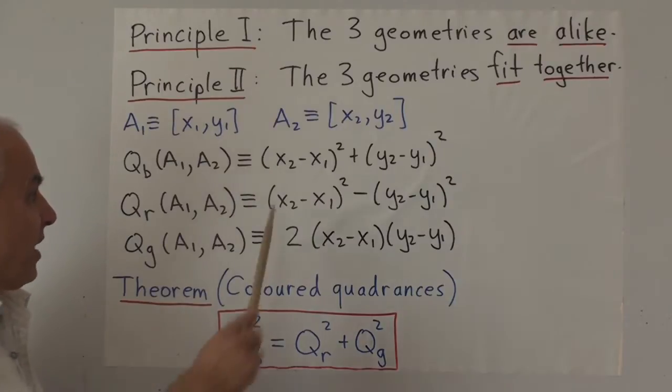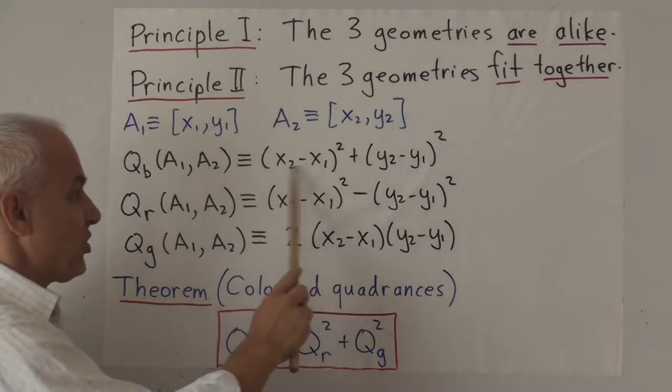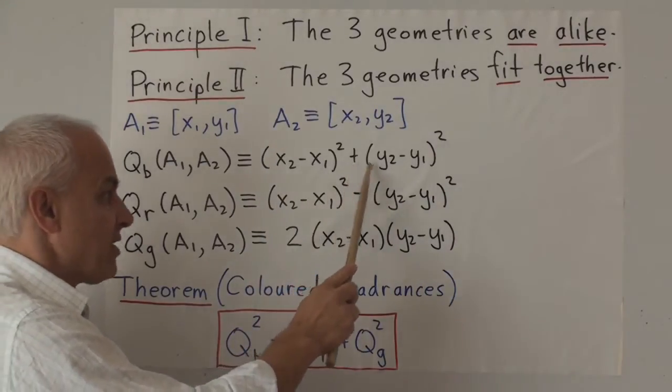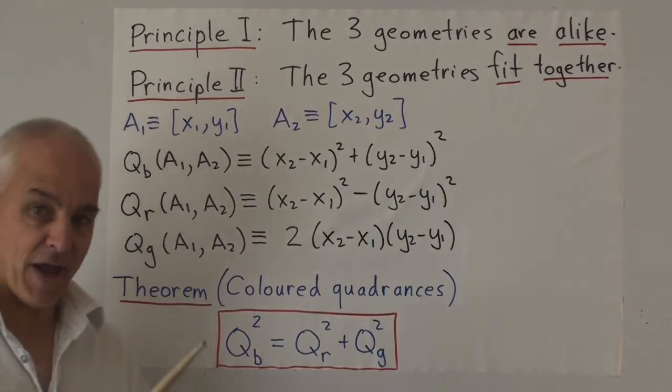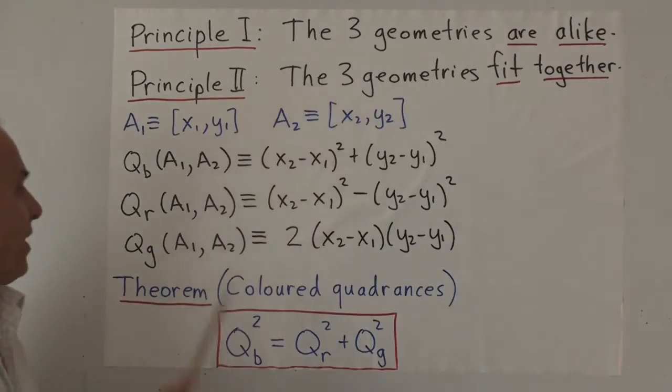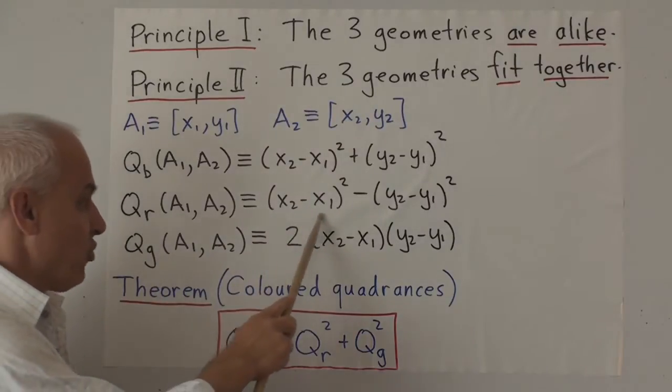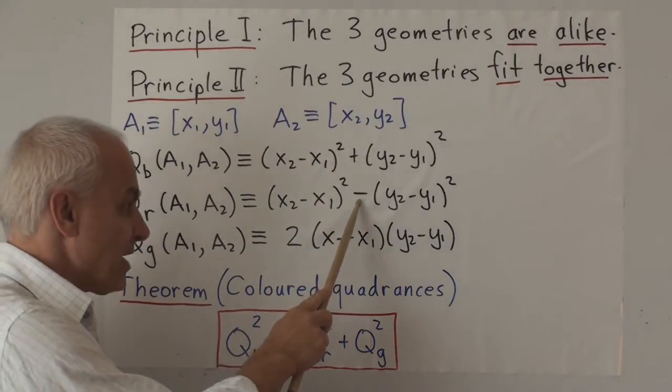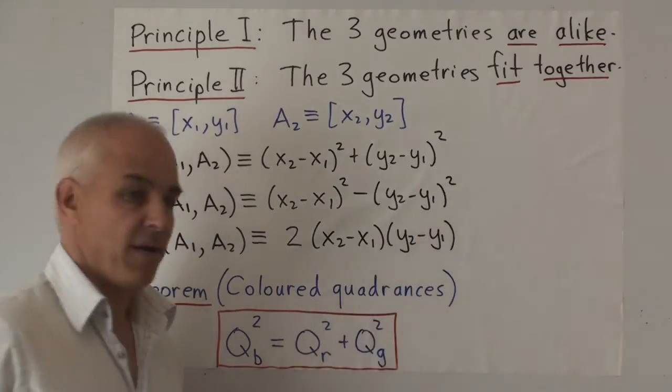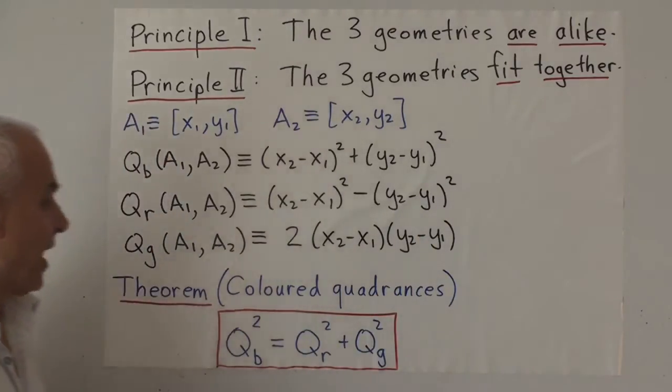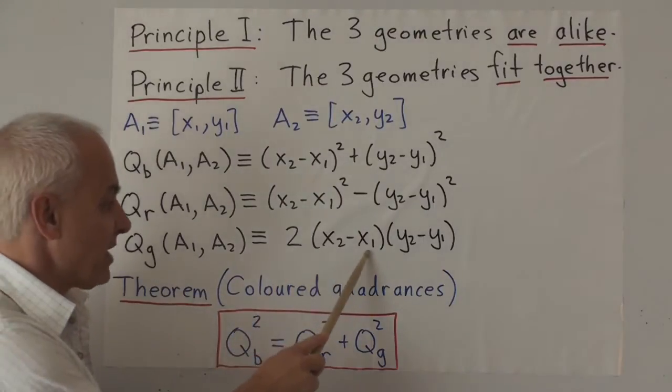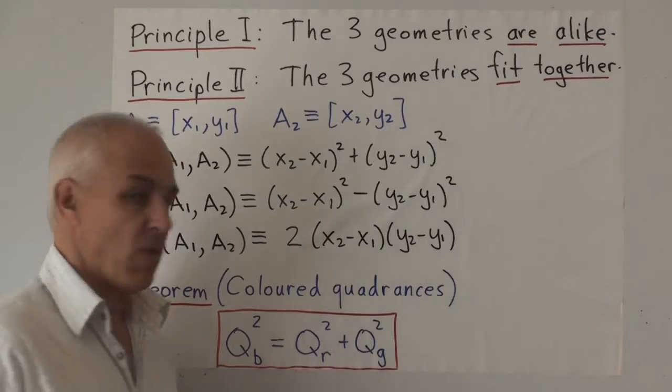There's the blue quadrance (x₂ - x₁)² + (y₂ - y₁)², that's the familiar Euclidean way of measuring quadrance. The red quadrance (x₂ - x₁)² - (y₂ - y₁)², that's the way a relativistic quadrance looks like. And here's another relativistic quadrance, the green one 2(x₂ - x₁)(y₂ - y₁).